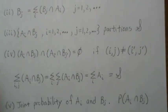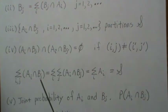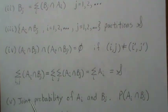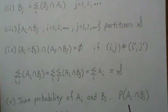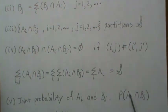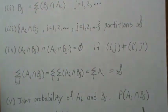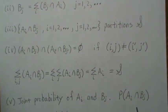This is important because from these two partitions and their intersection partition, we get what's called a joint probability. The probability of A_i intersect B_j is called the joint probability of A_i and B_j. This will play a part when we start talking about random variables, distributions, and multivariate random variables.